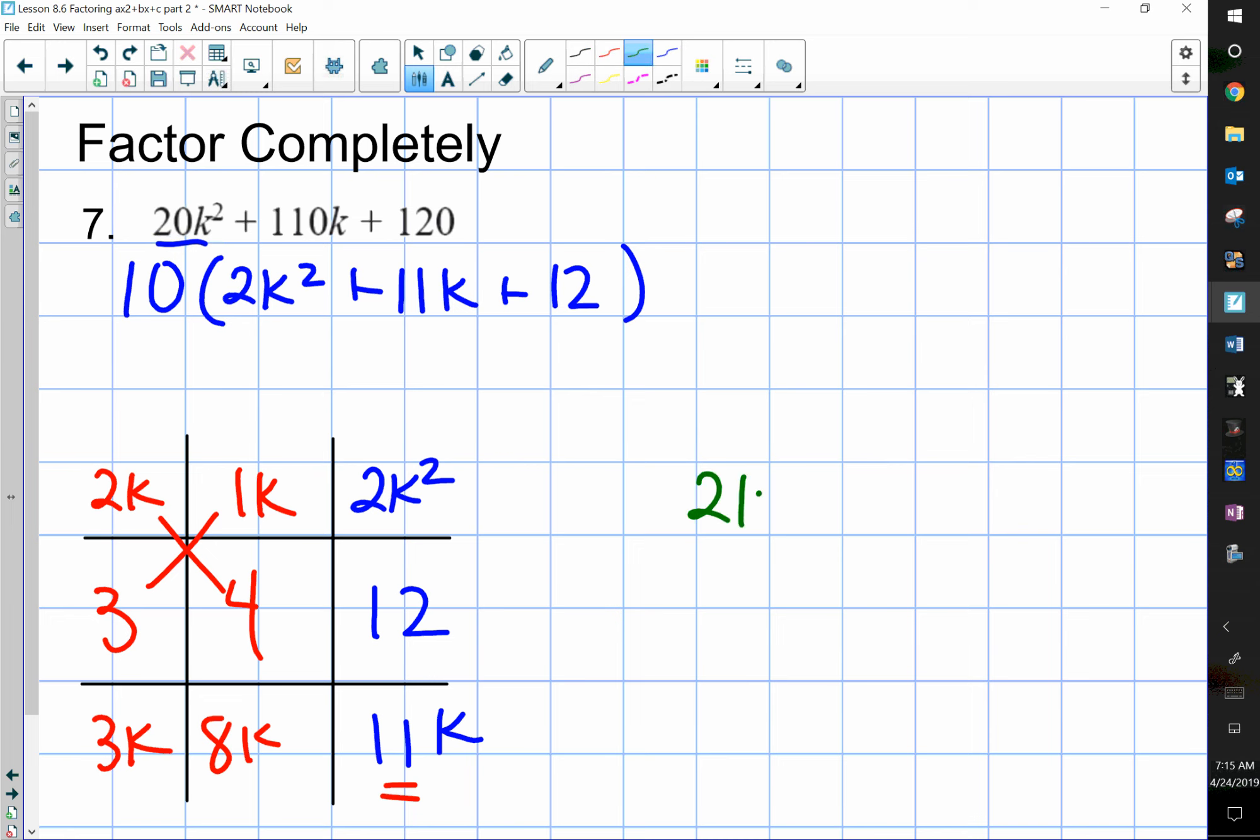So, my answer is 2k plus 3, and k plus 4. Then, I have to put the 10 that I factored out in the beginning at the front, and that's the answer.